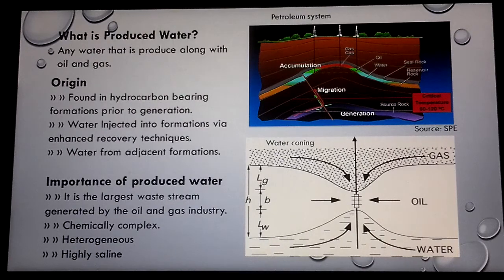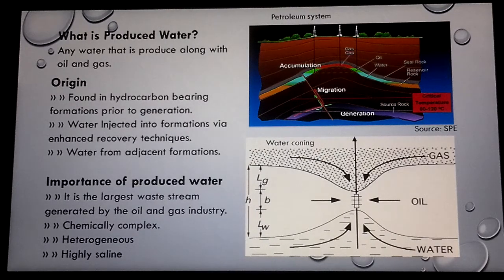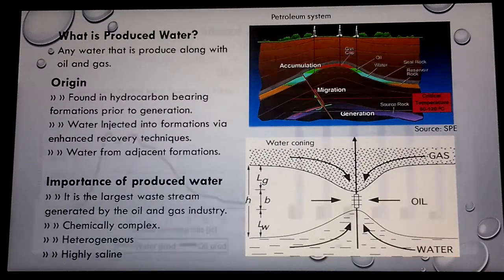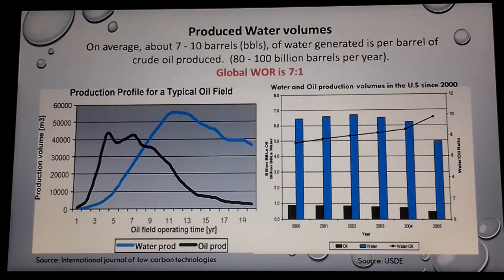Produced water is the largest waste stream generated by the oil and gas industry in terms of volume. It is chemically complex and heterogeneous, which means that its constituents can vary from well to well, and even for a single well it can vary significantly during its lifetime. It is brine and its salinity can be as high as ten times that of the oceans, which makes it complex to treat.